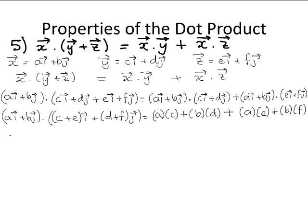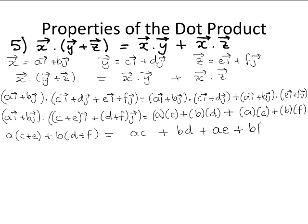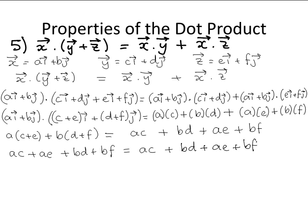So on the left, the dot product gives a times (c plus e) plus b times (d plus f), which expands to ac plus ae plus bd plus bf. And on the right, from the definition of the dot product, we get ac plus bd plus ae plus bf. You can see that ac plus ae plus bd plus bf equals ac plus bd plus ae plus bf, so both sides are equal — therefore the dot product is distributive.